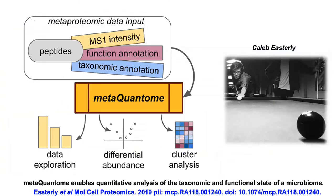We performed our analysis using MetaQuantum, which offers differential abundance analysis, principal components analysis, and clustered heatmap visualizations across multiple experimental conditions. It is an open source tool, available via command line, and also accessible via the Galaxy platform for reproducible analysis. The three main inputs are peptide quantitation report, functional annotation, and taxonomic annotation.